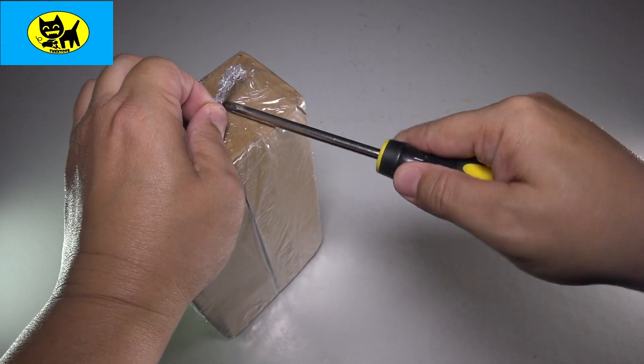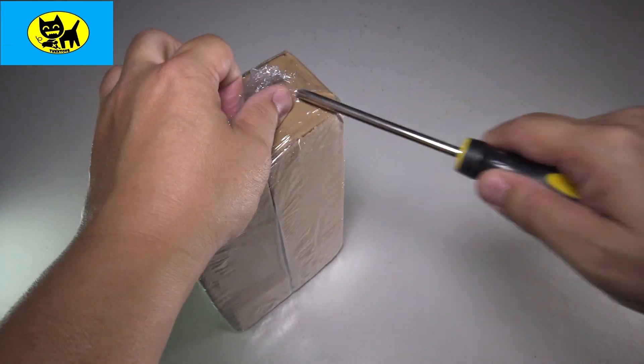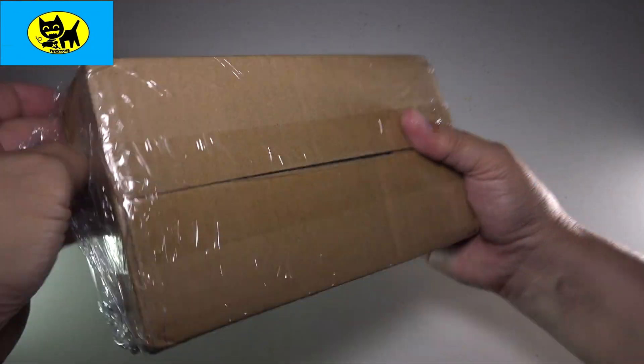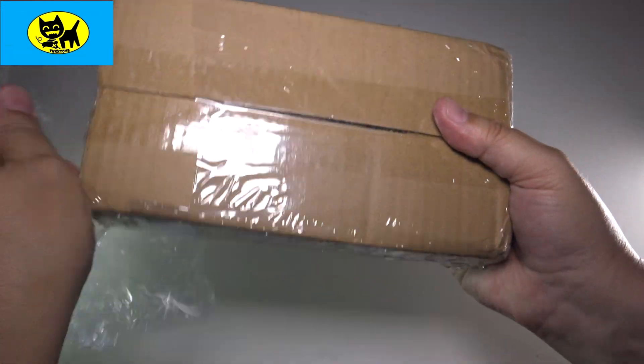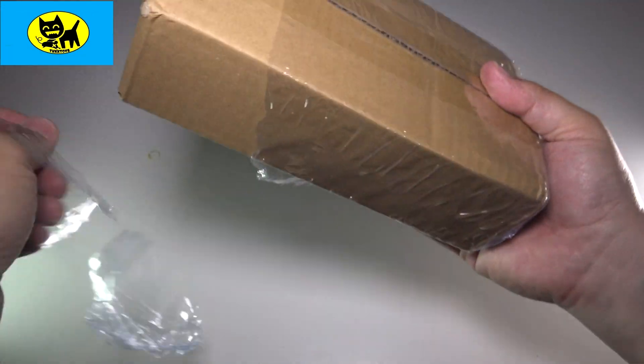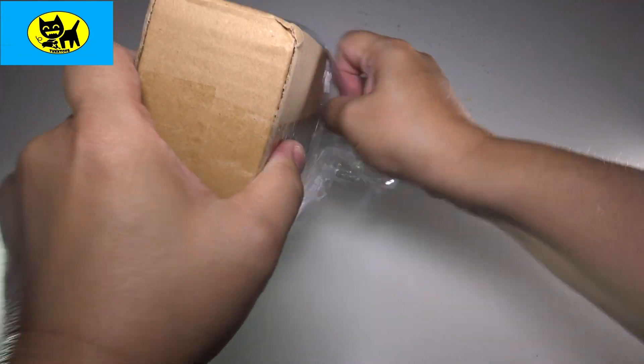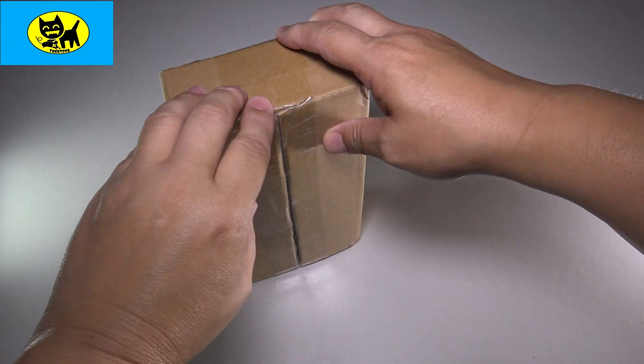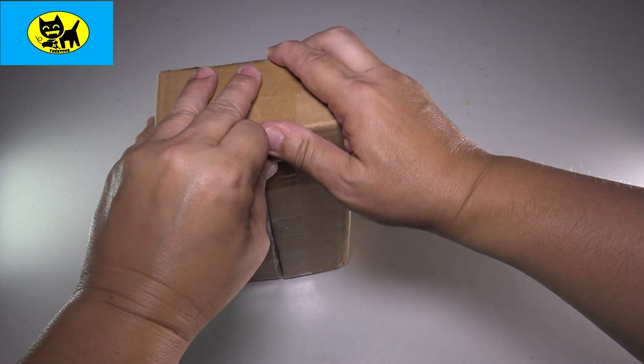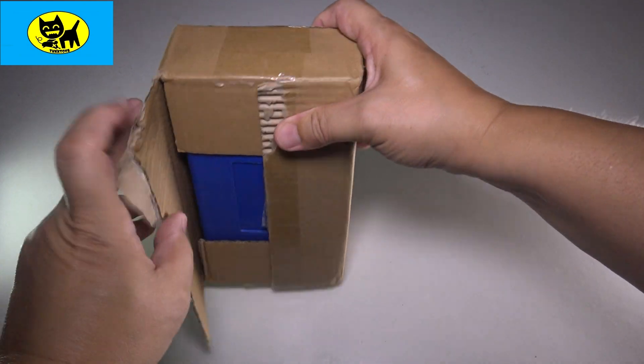Once we get it opened up, we'll pull off the protective plastic here. Here we go. It's like Christmas, guys. Let me go ahead and open this up here. Pulling off the plastic. There we go. All right. We're going to go ahead and open this up. Hopefully I can get this tape off easily. There we go.